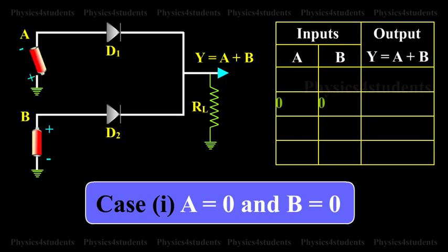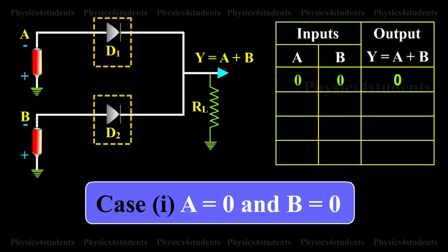Case 1: A is equal to 0 and B is equal to 0. When both A and B are at 0 levels, i.e. low, the output voltage will be low because the diodes are non-conducting.